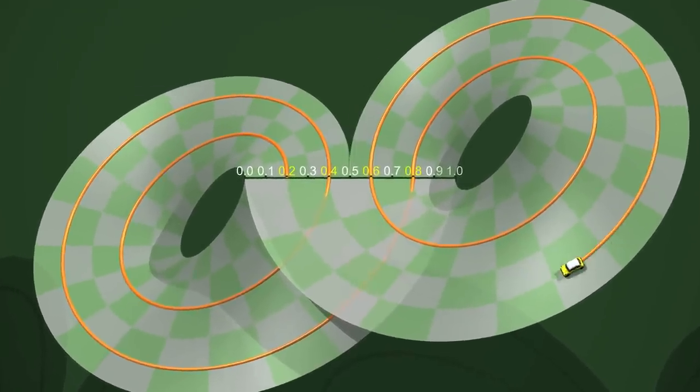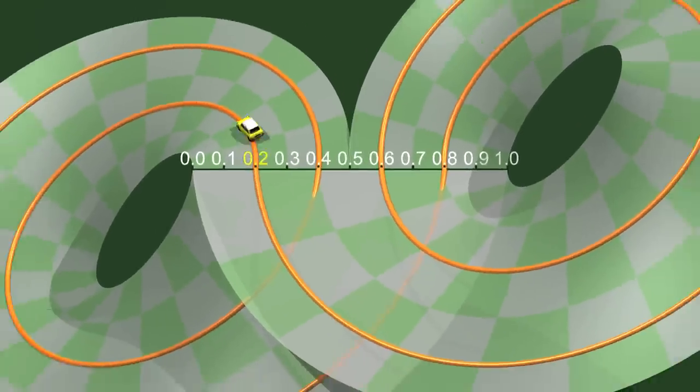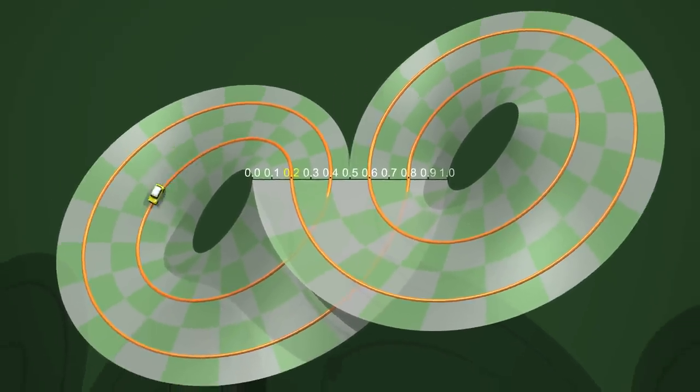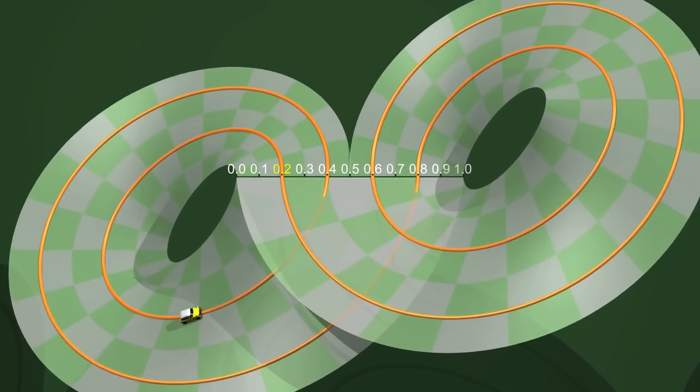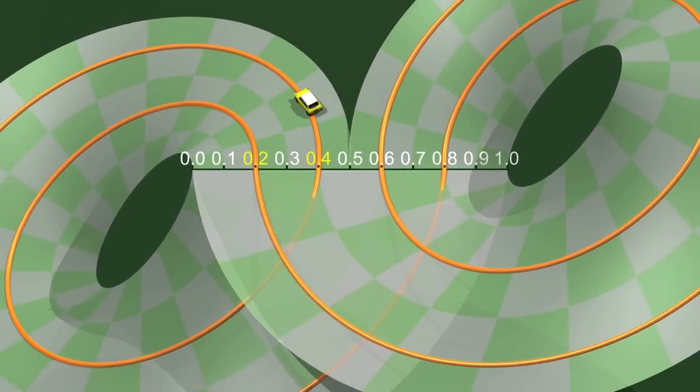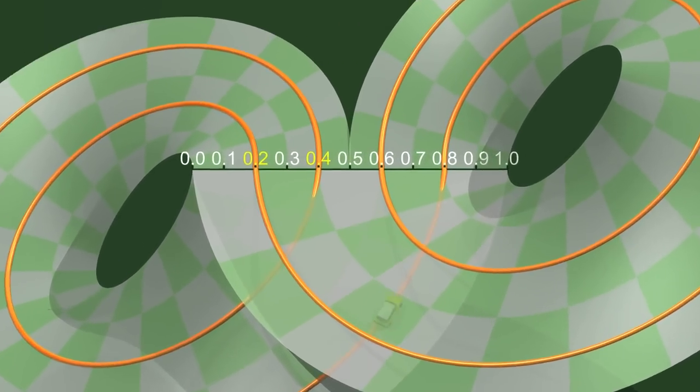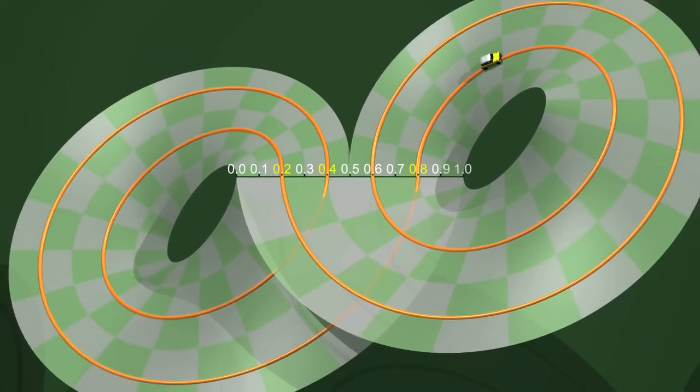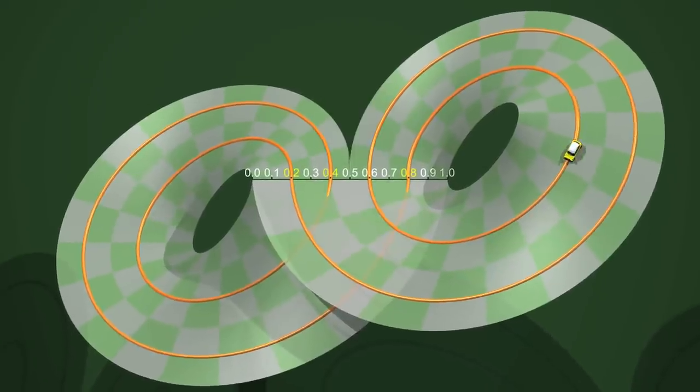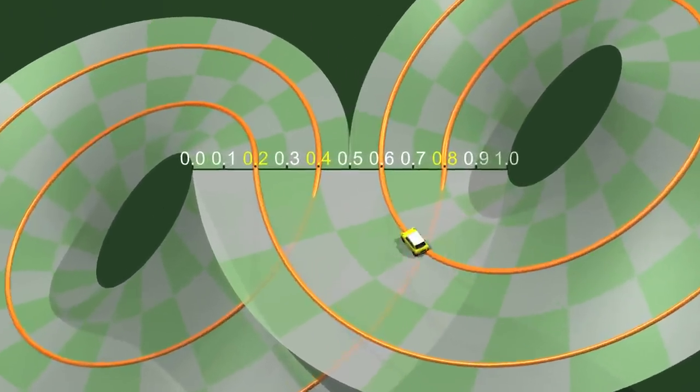If we start from the point x, then we will return to the point 2x, if x is smaller than 1 half. And we will return to the point 2x minus 1, if x is larger than 1 half. In other words, when the car moves, the points where it meets the starting line are doubled at every turn, except we need to subtract 1, if the result is greater than 1.